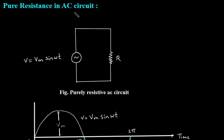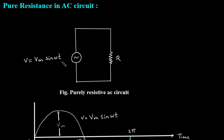Pure resistance in AC circuit. Here we can see this is a purely resistive AC circuit, where this is a resistor and this is an AC source. V is equal to Vm sin omega t.